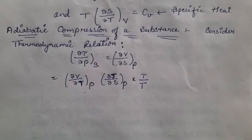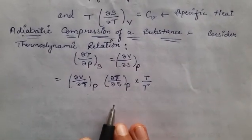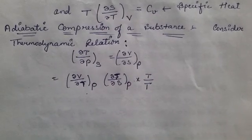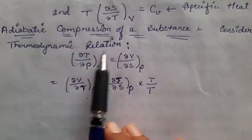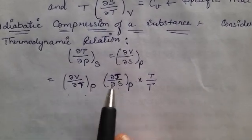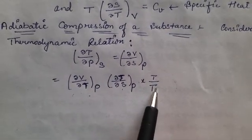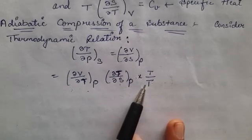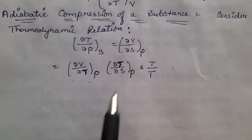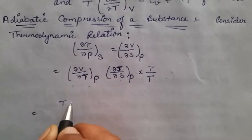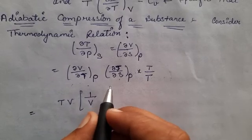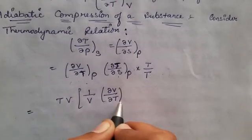To find the value of the specific heat constant, we reverse the order of this equation. Multiplying and dividing by temperature T, we get the term (1/V)(∂V/∂T) at constant pressure.